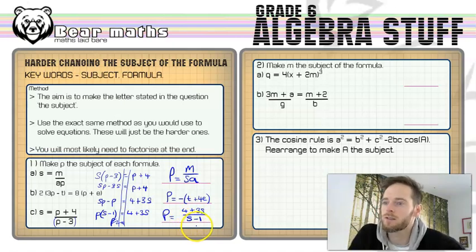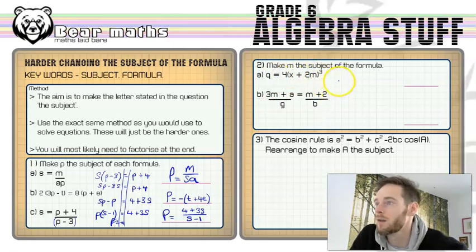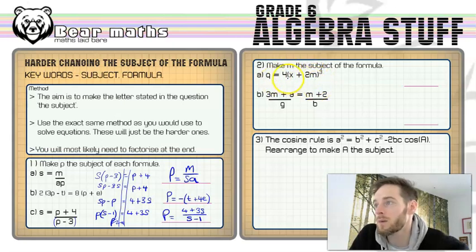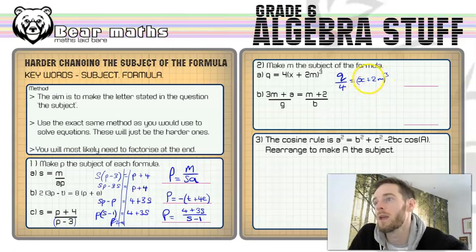Moving up to question 2 — slightly more complication, but nothing specifically more difficult. We've got a cube going on, so the first one: q equals 4 times (x plus 2m) all cubed. Think of the opposite order of operations — you need to undo everything that's been done to m. The first thing is to get rid of the multiplied by 4, so q over 4 equals (x plus 2m) cubed. Then to get rid of the cubed, we cube root both sides: the cube root of q over 4 equals x plus 2m.